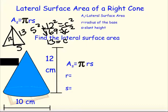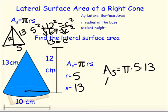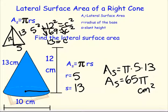That helps quite a bit. My radius is half the diameter, so it's 5, and the slant height is 13. The lateral surface area is pi times 5 times 13. Working that out, 5 times 13 is 65, so the lateral surface area is 65π centimeters squared. We can multiply by 3.14 to get the decimal answer, or leave it in terms of pi.